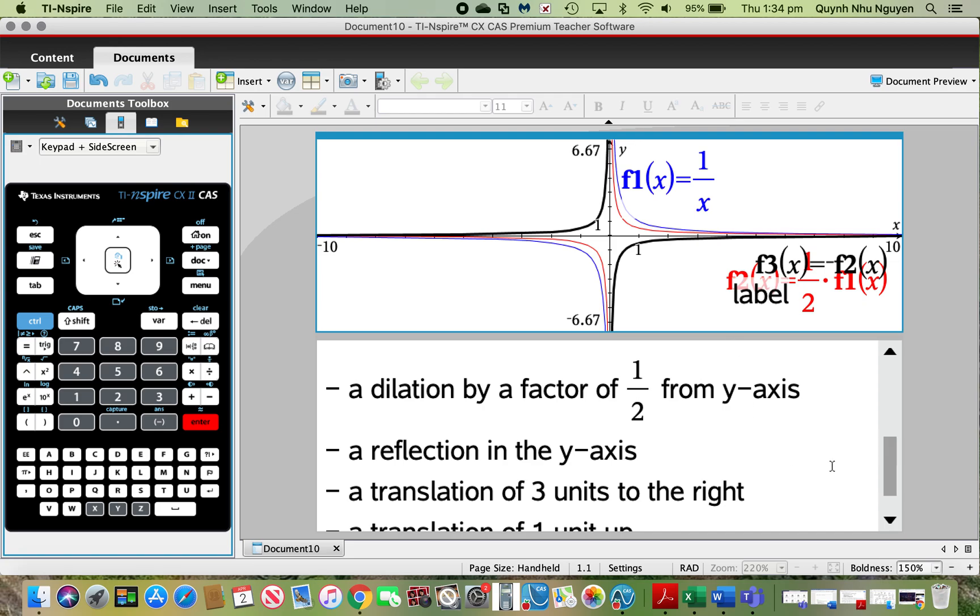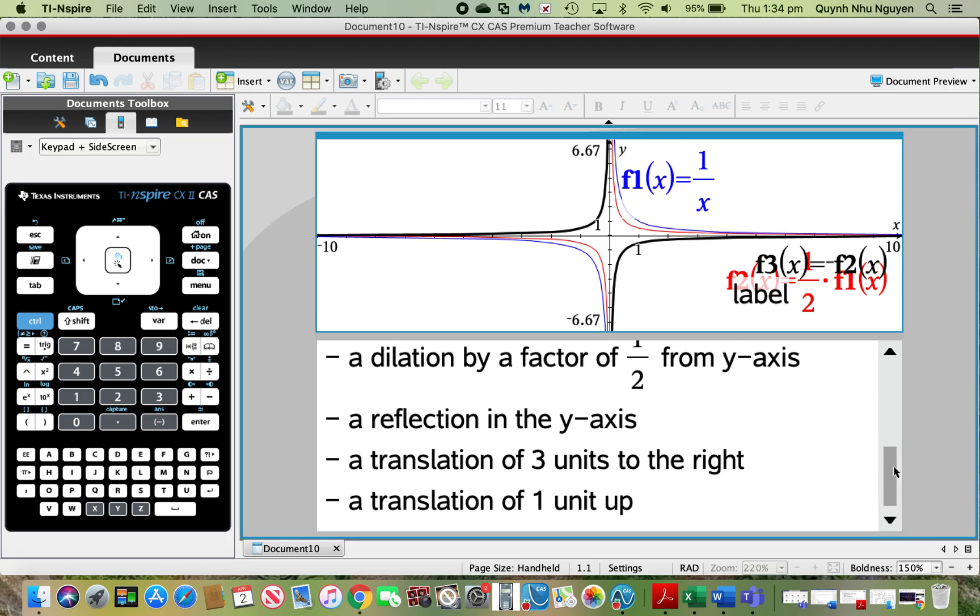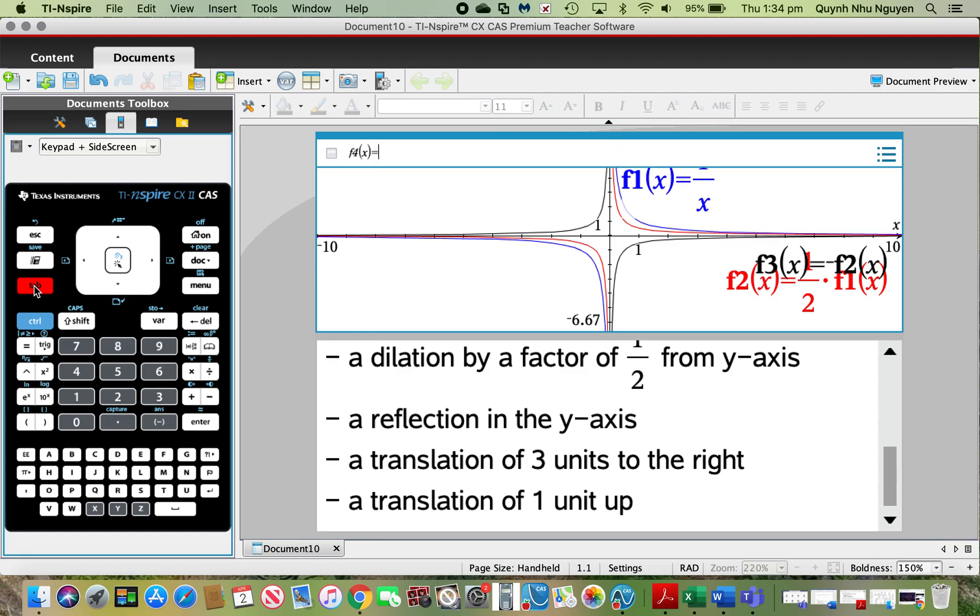Let's move down to our translation now. I have a translation of 3 units to the right, so this will be in my f4. I will take my f3 and shift this 3 units to the right. So inside my f3, I should input x minus 3, in order for it to have a horizontal shift of 3 units to the right.